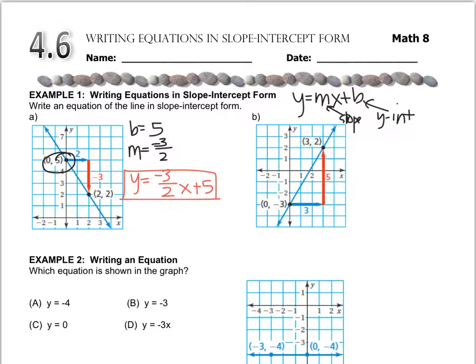In letter b we're going to do the same thing. The intercept is right here at (0, negative 3). So the b value is negative 3 and the slope we have to count boxes.